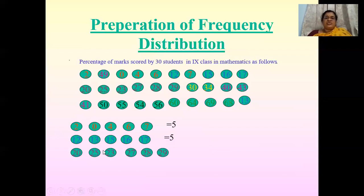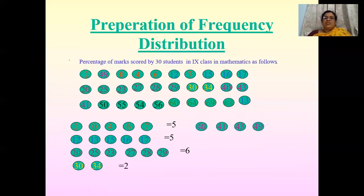Between 20 to 29, there are 6 students. For 30 to 39, only 2 students have secured marks. For 40 to 49, 4 students have secured. For 50 to 59, 4 students have secured. We have to categorize the marks according to class limits like this.